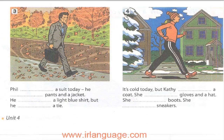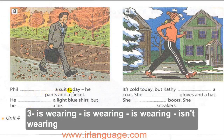Picture number three: Phil is wearing a suit today — pants and a jacket, and a light blue shirt, but he is not wearing a tie. Use the verb 'wear': Phil is wearing pants and a jacket, he's wearing a light blue shirt, but he's not wearing a tie.